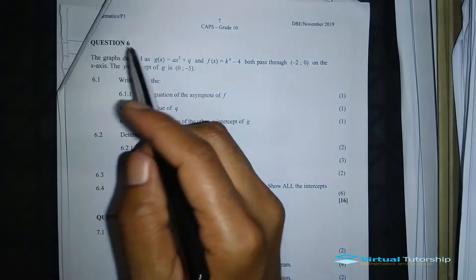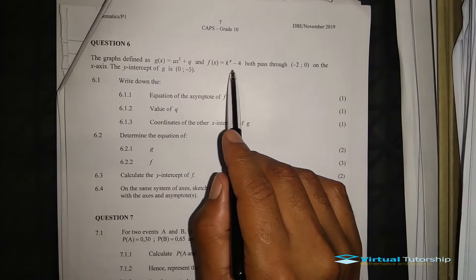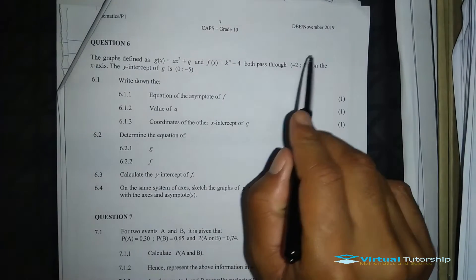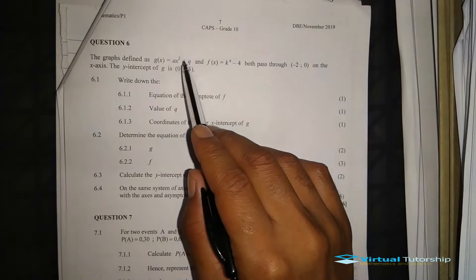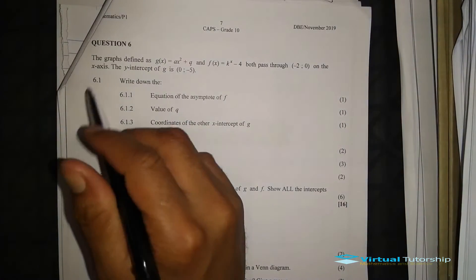Let's focus on Question 6. Part A: the functions are defined as G(x) equal to a hyperbolic expression, and F(x) equal to an exponential function. Both pass through minus two and zero on the x-axis, so minus two and zero is the common x-intercept for both F and G. The y-intercept of G is also given.